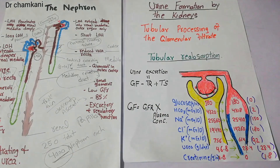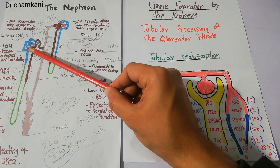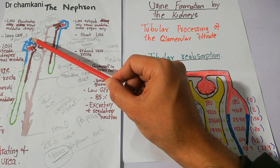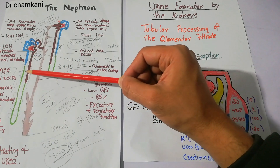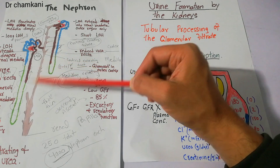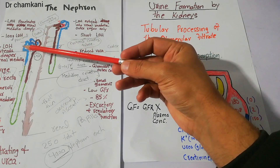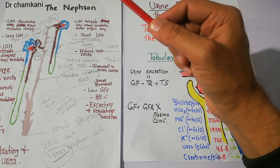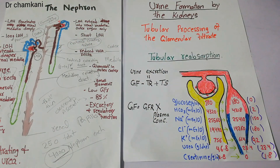What exactly happens inside the nephron? The first step in urine formation is filtration, which occurs mostly at the Bowman's capsule. Blood entering the glomerular capillaries is filtered, and the filtrate then moves through different parts of the nephron: first the proximal tubule, then the loop of Henle, then the distal tubule, then the collecting tubules and collecting ducts, and finally into the ureter. We have discussed filtration in detail and now we will discuss tubular reabsorption stepwise.